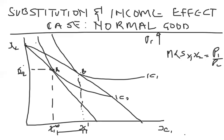Before the price change, the consumer was getting a certain utility from consuming x1 and x2. Now price has fallen and real income has increased, so the person can buy more. But we want the person to maintain the same utility as before — not the same quantities of x1 and x2. So what is the amount of money to deduct? That is what you call the compensated variation. Deducting income means the budget constraint shifts leftward.